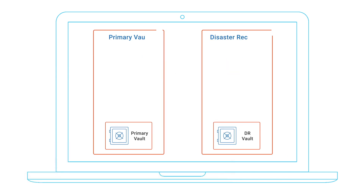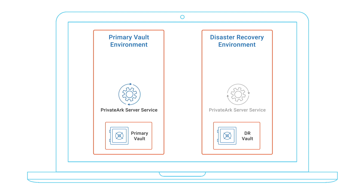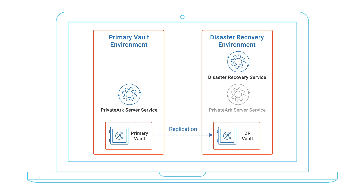At the beginning of the disaster recovery exercise, the Private ARK server service, which is responsible for providing the main backend vault service to the components, is started on the primary vault and stopped on the disaster recovery vault. The CyberArk disaster recovery service is an additional software component that can be installed on the vault server. The DR service is responsible for replicating data and metadata from the primary vault to the DR vault. At the beginning of the exercise, the DR service is started on the DR vault and stopped on the primary vault.